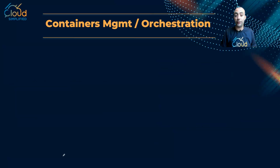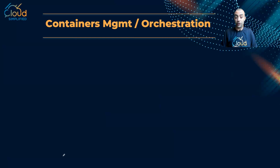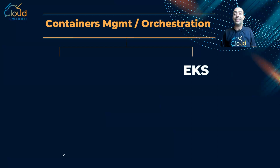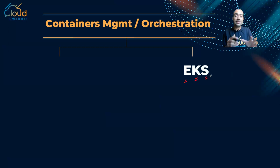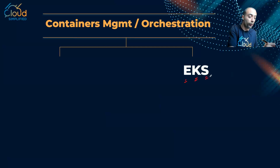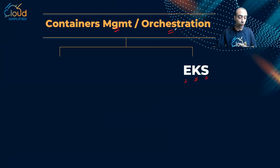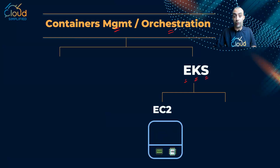Now let's see how to deploy containers on AWS. If I already have on-premise Kubernetes containers and want to migrate to the cloud, I can use the first service called EKS — Elastic Kubernetes Service. This is a fully managed Kubernetes service that makes it easy to create a Kubernetes cluster for management and orchestration. The next question is: where do I run my containers? I have two options.